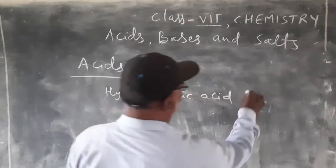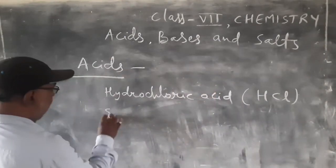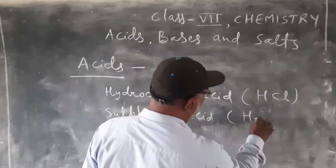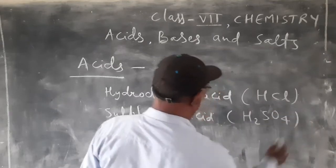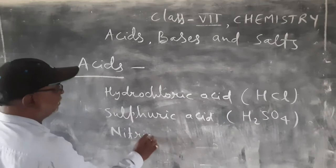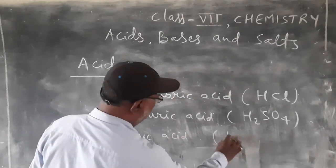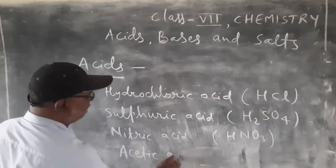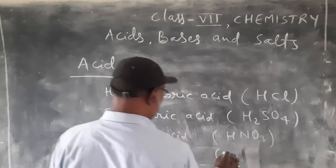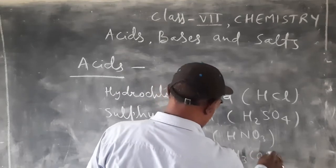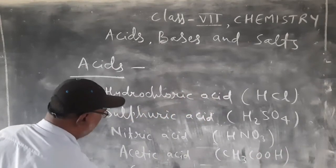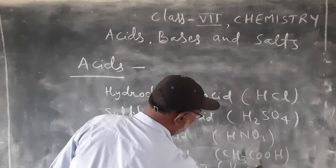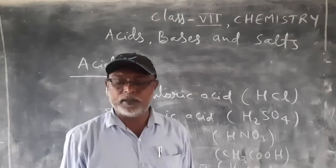Hydrochloric acid has the chemical formula HCl. Sulfuric acid has the formula H2SO4. Its formula is HNO3 for nitric acid. Similarly, acetic acid has the formula CH3COOH. Carbonic acid has the formula H2CO3. There are many acids.